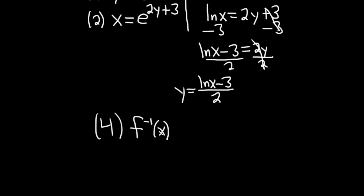f inverse of x is equal to all of this right here. Because this is the same thing as y. So ln x minus 3 all divided by 2. And so this would be the inverse of our original function.